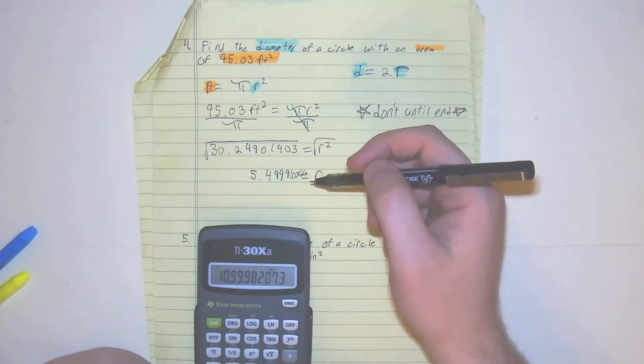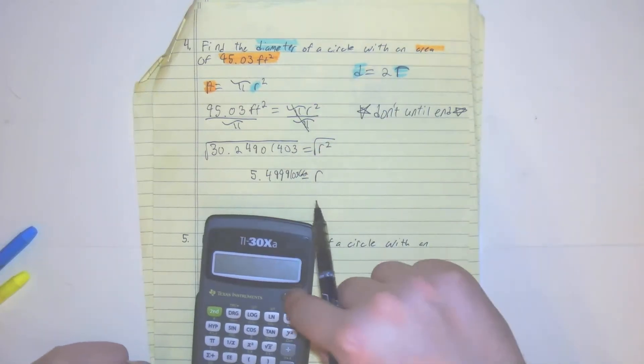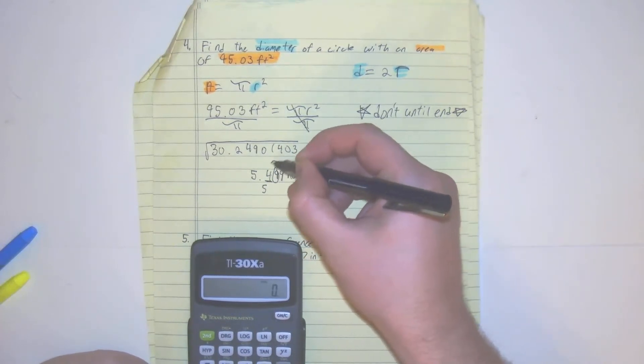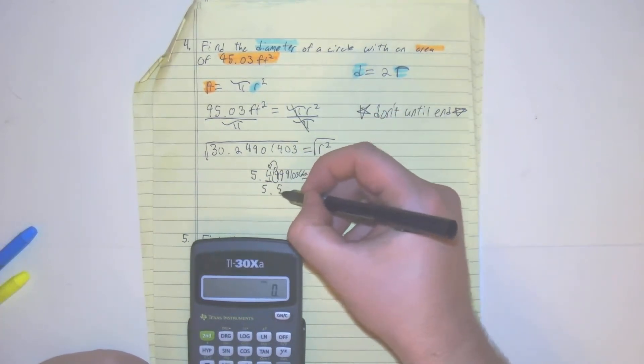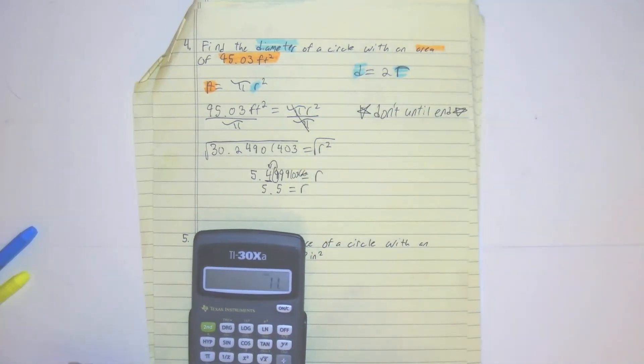So right here, our 5.5, we round it. We get 5.5 because we're rounding to the nearest tenth. This would round it up. We get 5.5 is equal to our radius. You do 5.5 times 2.